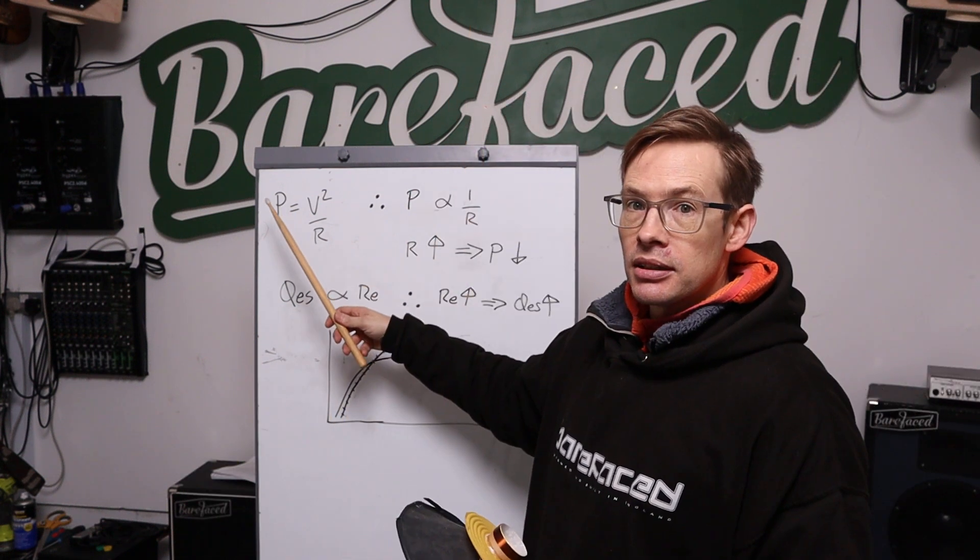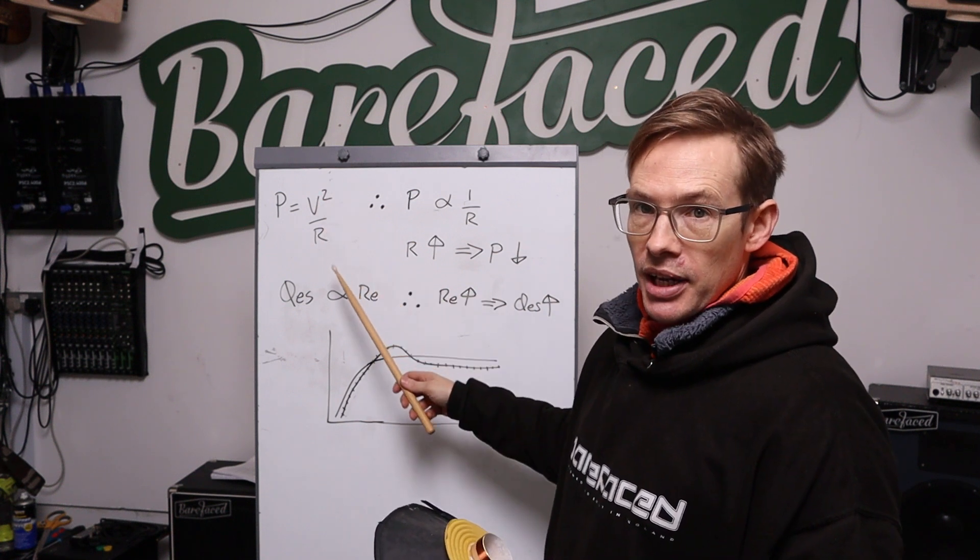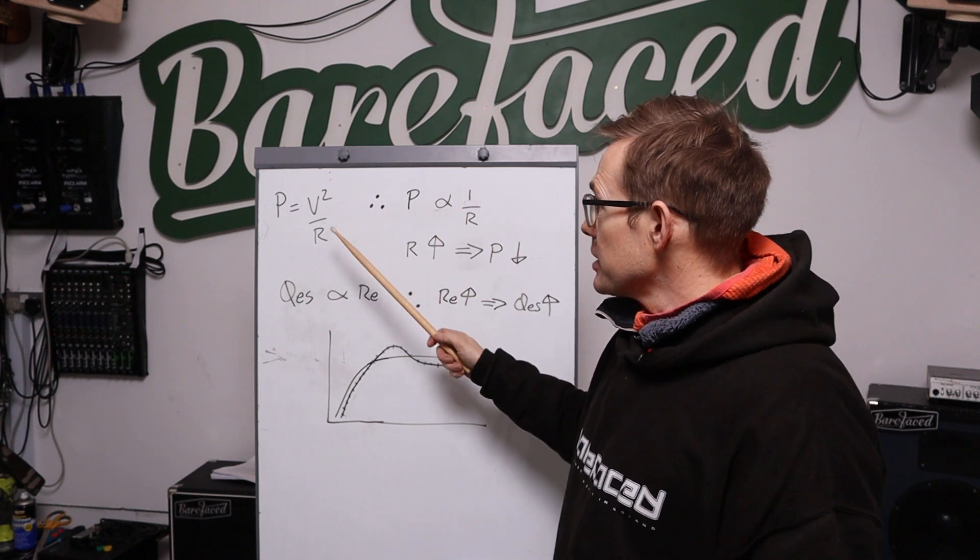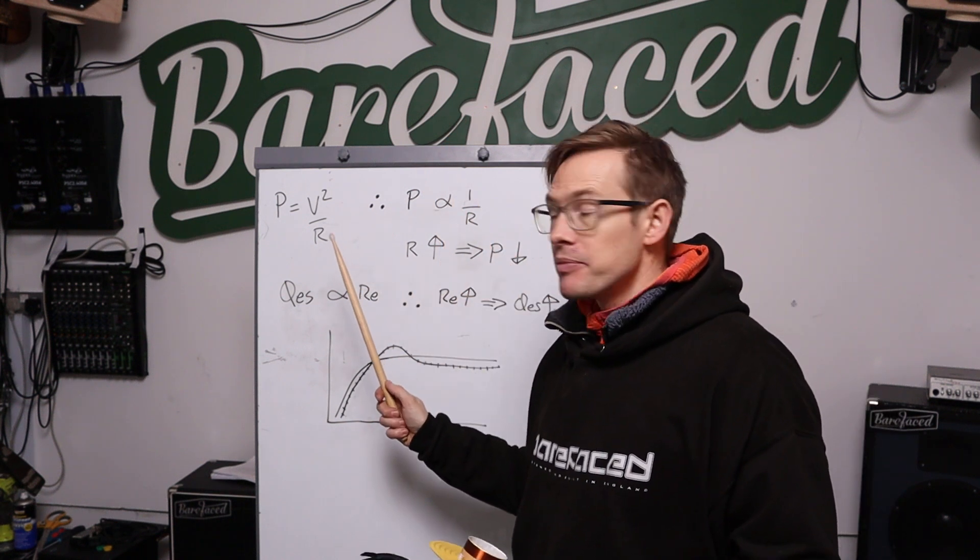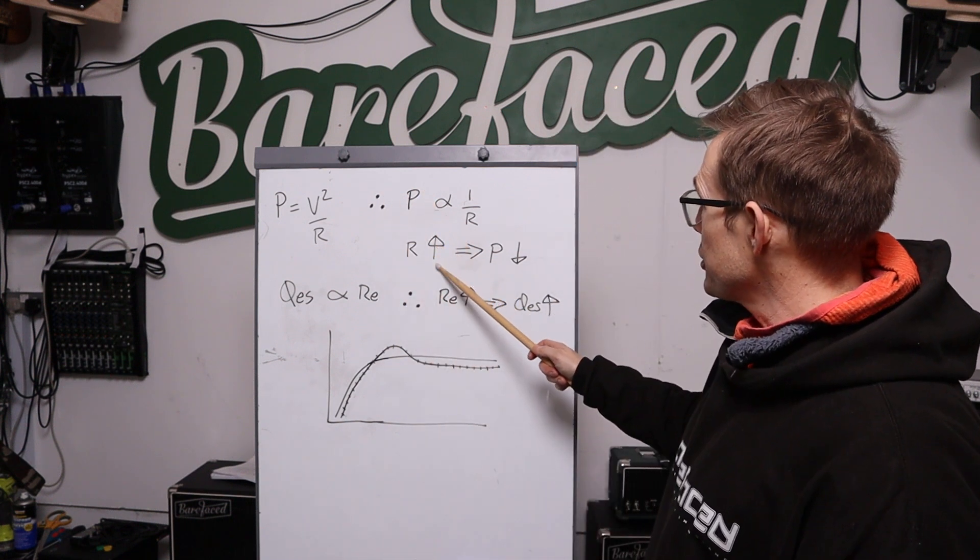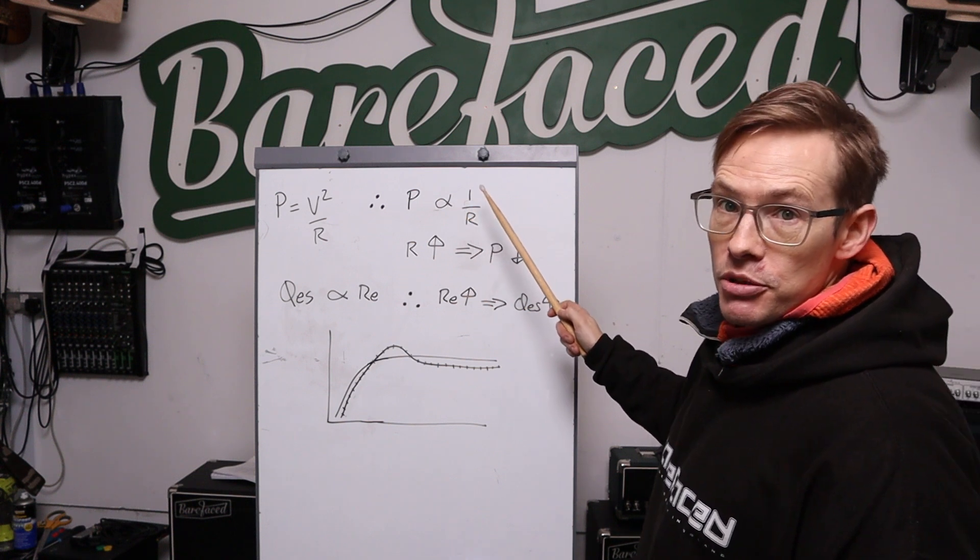So, power equals voltage squared divided by resistance. Now, you don't need to know what the voltage is because what you need to realize is that if the resistance goes up, the power goes down. Power is inversely proportional to resistance.